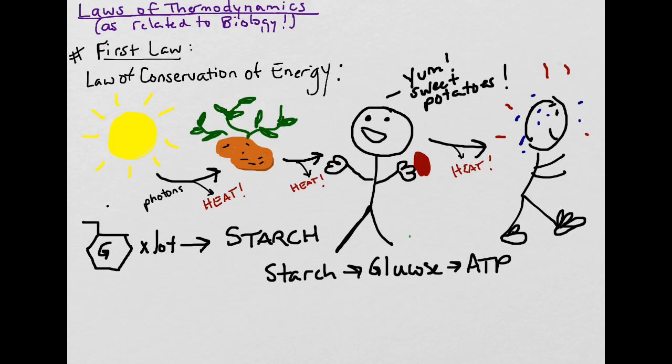Okay, so we're going to start here with the sun. The sun is our ultimate source of energy here on this planet. So from the sun comes photons, little packets of energy, and also heat. And those photons are used by plants.